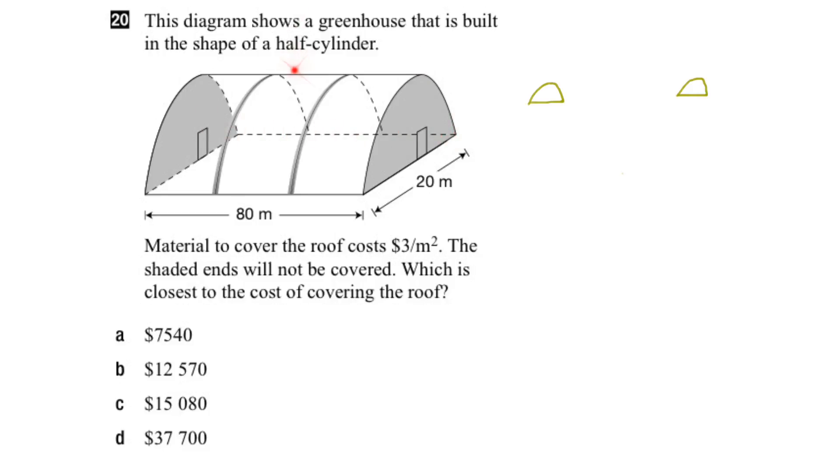Now, if we were to compress the roof, just push down hard on the roof, you can see that it actually would flatten out to be a rectangle. And so the surface area of this half a cylinder would equal this half a circle, plus the rectangle, plus the other half circle.